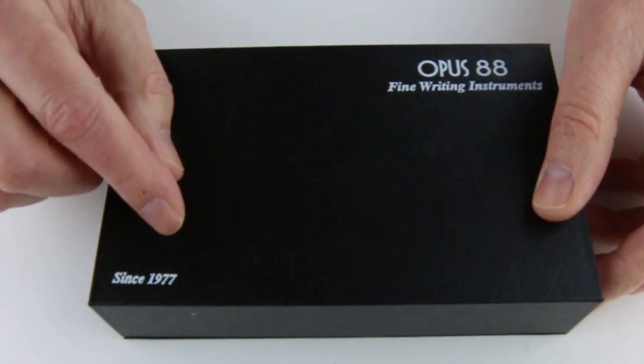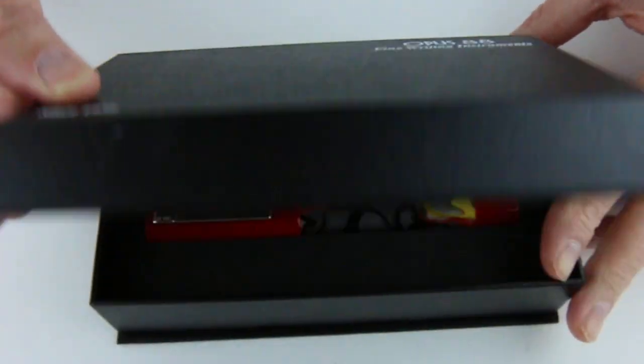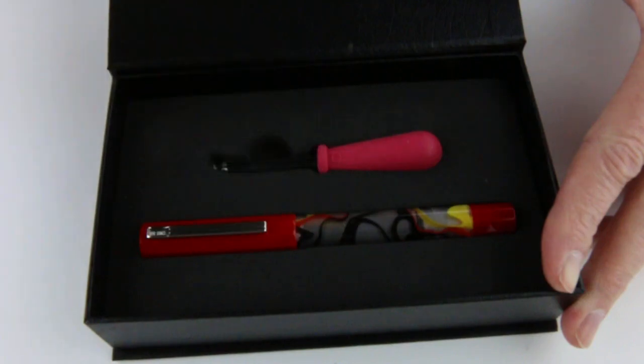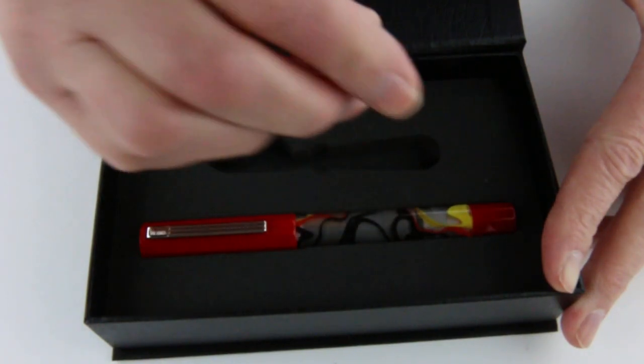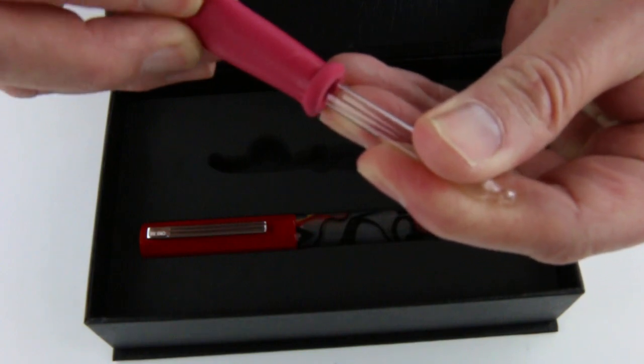The box, marked since 1977, has a magnetic catch at the front that lifts open. Included with the pen is information about Opus 88. It is an eyedropper pen, so there is a glass eyedropper included.